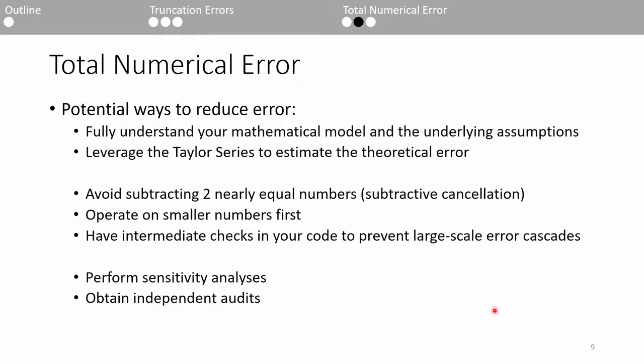For most practical cases, we don't know the exact error associated with the employed numerical method. The exception is when we know the exact solution which makes our numerical approximations unnecessary. Therefore, for most engineering problems, we must settle for some estimate of the error in our calculations. Here are some more guidelines to help reduce total error. Before you start coding, you should understand the physical processes and mathematical models you're using. Most models employ a series of simplifying assumptions which can inherently contribute to truncation errors. You can use the Taylor series to obtain a rough theoretical estimate of the model's error for some very simple applications.